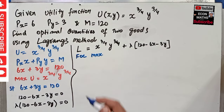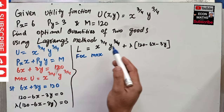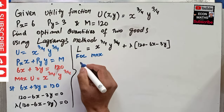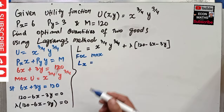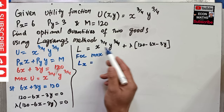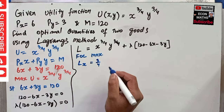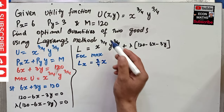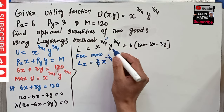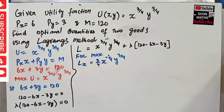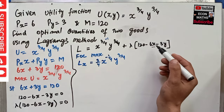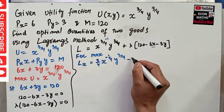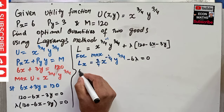The first order conditions for maximization require that we take the partial derivative of the Lagrangian with respect to x, y, and lambda, and set them each equal to zero simultaneously. The partial derivative with respect to x: the derivative of x^(3/4) gives (3/4) * x^(-1/4) * y^(3/4), and the derivative of the lambda term gives -6*lambda. Setting this equal to zero gives us equation one.